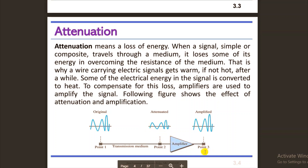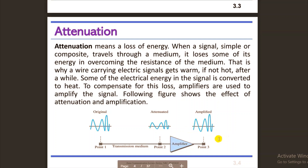The receiver will finally be able to use an amplifier. The amplifier will amplify the signal. If the signal uses an energy amplifier, the receiver will be able to do more. This is the transmission impairment of attenuation.